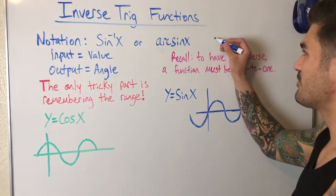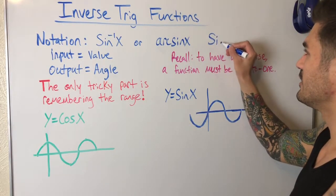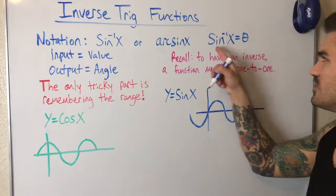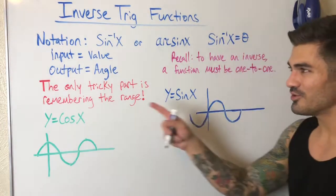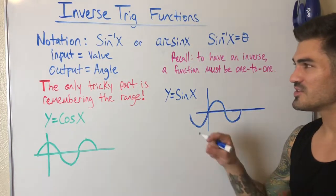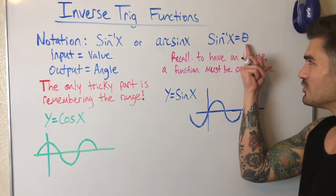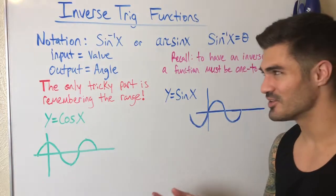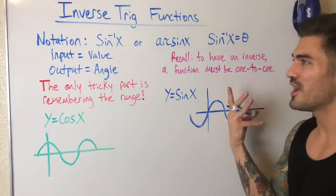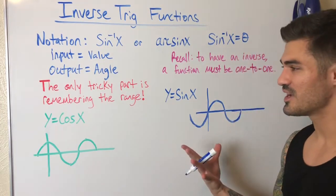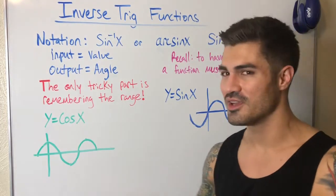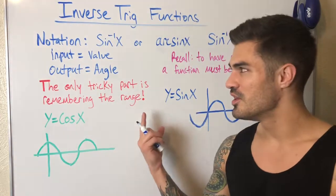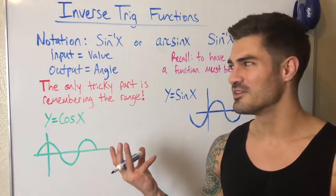Sometimes we rewrite whatever problem we have when evaluating an inverse trig function — we can rewrite it and say it equals theta, because we know this is some angle, that's what our output is. So this is like asking: what angle gives me this value for sine? For example, one half — what angle gives me one half for sine? In other words, what theta can I plug into the original sine function that will give me one half?